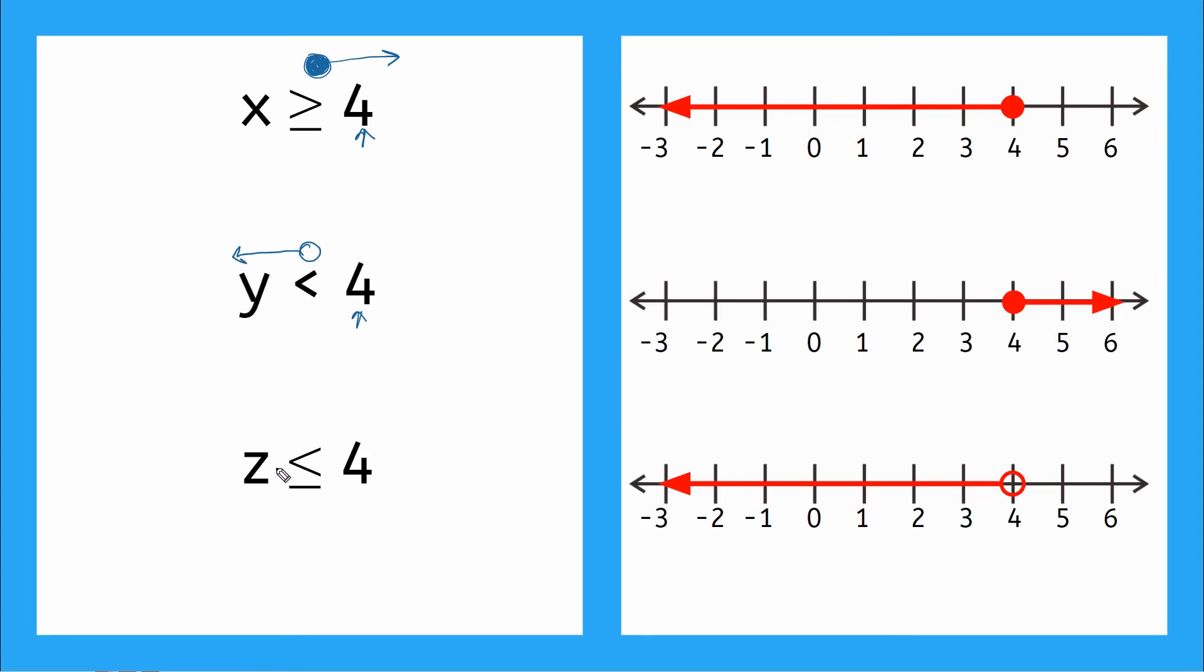Now for this one, z is less than or equal to 4. This symbol here, open or closed circle? Closed circle. Anytime I have an or equal to, I'm including my number in the solution. So I have that circle at 4. And z is less than or equal to. So that means what direction is my arrow pointing? Yeah, towards 0, the numbers that are less than 4. So it's going to look something like that.